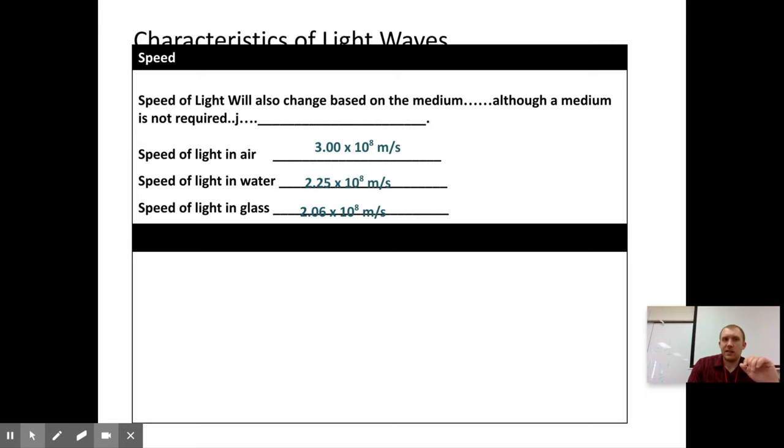So the characteristic of light waves that's different is that it goes down as the medium gets more dense - air to water to glass, it goes down a little bit, and not as significantly. I mean, it's still changing by a factor there, but just not quite as crazily. So that's a characteristic of light waves.